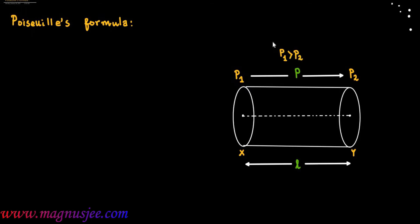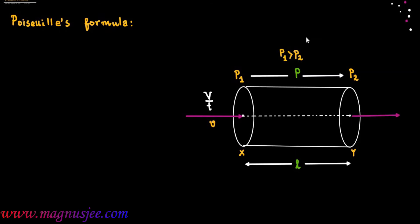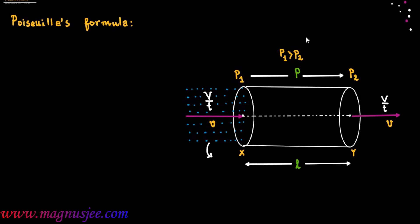As P1 is greater than P2, the pressure of liquid at end x is greater than at end y. That's why liquid will flow through the pipe towards the right with a rate V by T. V by T is the rate of flow of liquid. Liquid flows into the pipe with rate V by T and flows away from the tube with the same rate V by T.